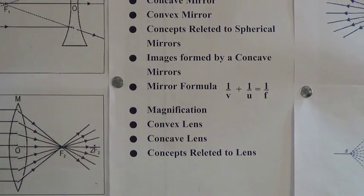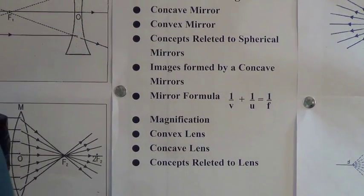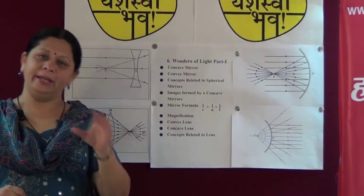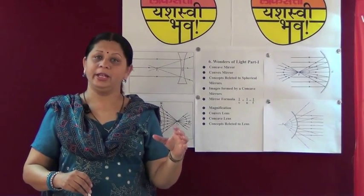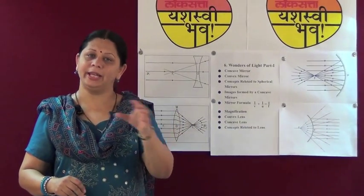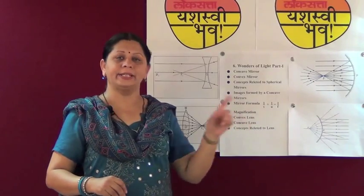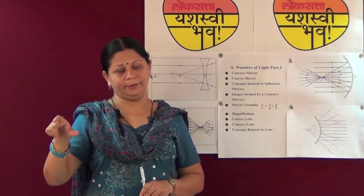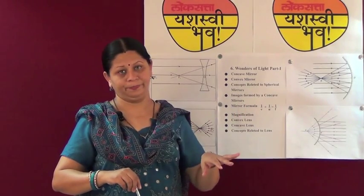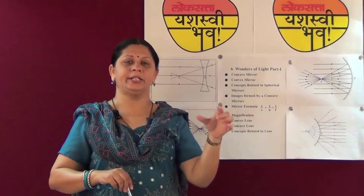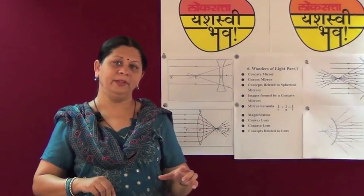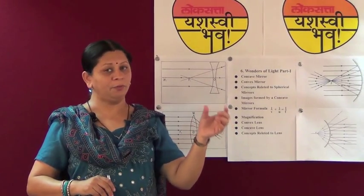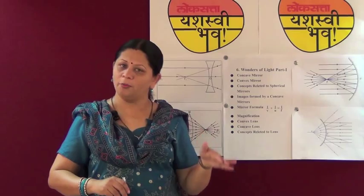Now, what is magnification? Magnification of mirrors is the proportion of the height of the image to the height of the object. If height of image is h2 and height of object is h1, then magnification M is given by h2/h1. Magnification M is also given as v/u, that is the distance of the image from the pole divided by the distance of the object from the pole.